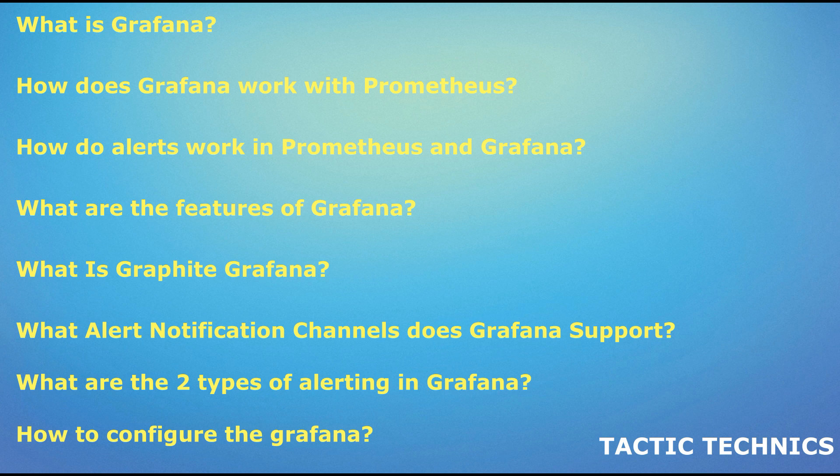What is a label in Grafana? Labels are a type of key-value pair used to describe a log stream — we call them metadata. Labels are particularly crucial in Loki since they define a stream. More precisely, the stream is defined by the combination of each label key and value.